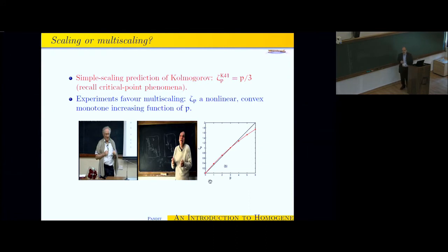The best measurements, best numerical simulations, they show significant deviations, especially when you go beyond p equal to three. And these deviations, for the purposes of this talk, we will call multiscaling. And they were first rationalized by Uriel Frisch, who you see here, lecturing actually at ICTS, and Giorgio Parisi.